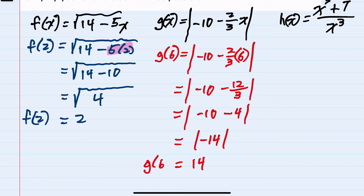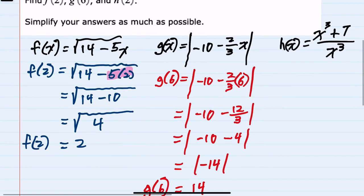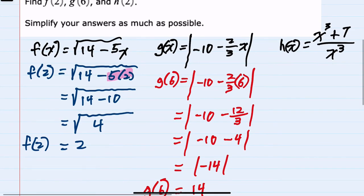Moving to the h function, we're looking for h of 2. Replacing all the x's with 2's, this would be 2 cubed plus 7 over 2 cubed. In the numerator, we can simplify by doing the exponents first: 2 cubed is 8 plus 7.